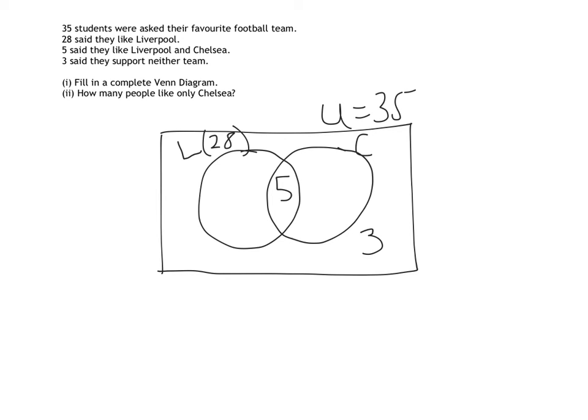There's one other section that I can fill in now, and it's my Liverpool circle. So I know that 28 people in total told the survey that they liked Liverpool, but 5 of those people actually said they liked Chelsea as well. So just like we did before, we need to make sure that we don't fill 28 in straight away. We need to do 28 minus the 5, and therefore there was 23 people who liked Liverpool only.